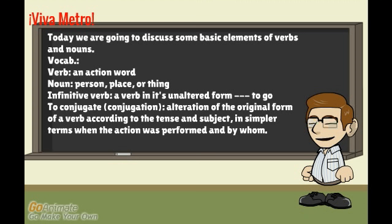To conjugate — which is a verb, or conjugation — refers to the alteration of the original form of a verb according to the tense and subject. In simpler terms, when the action was performed and by whom.